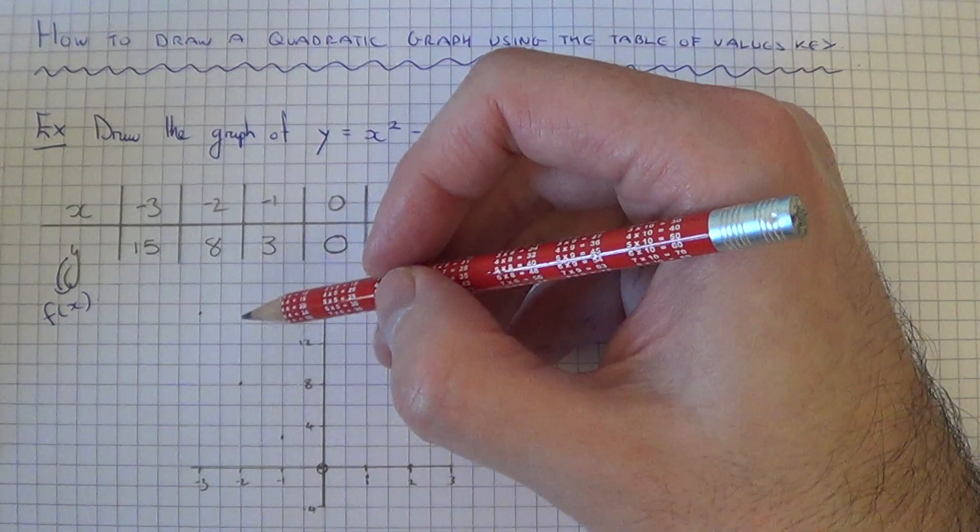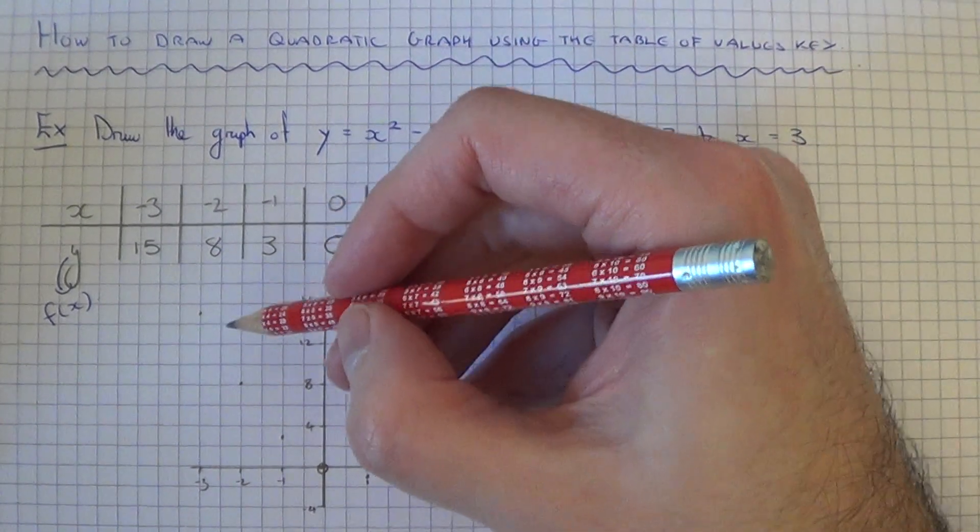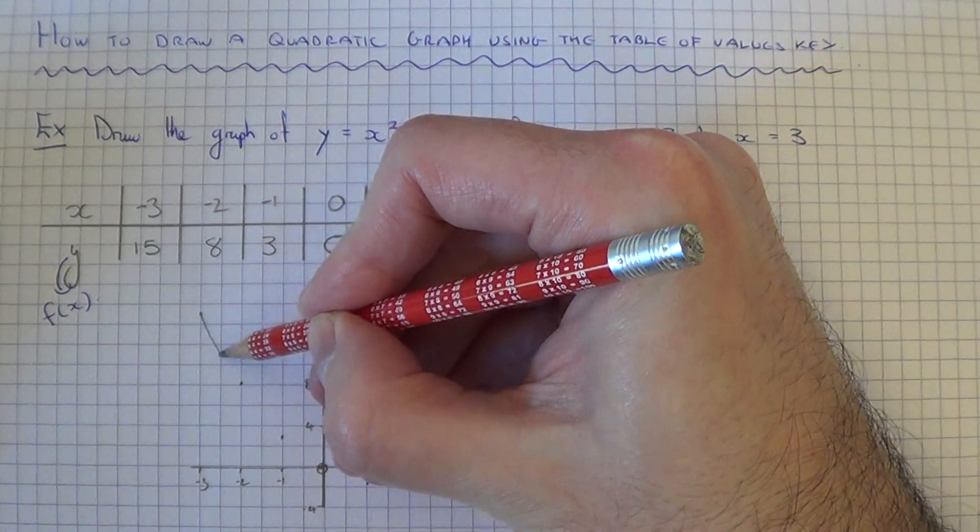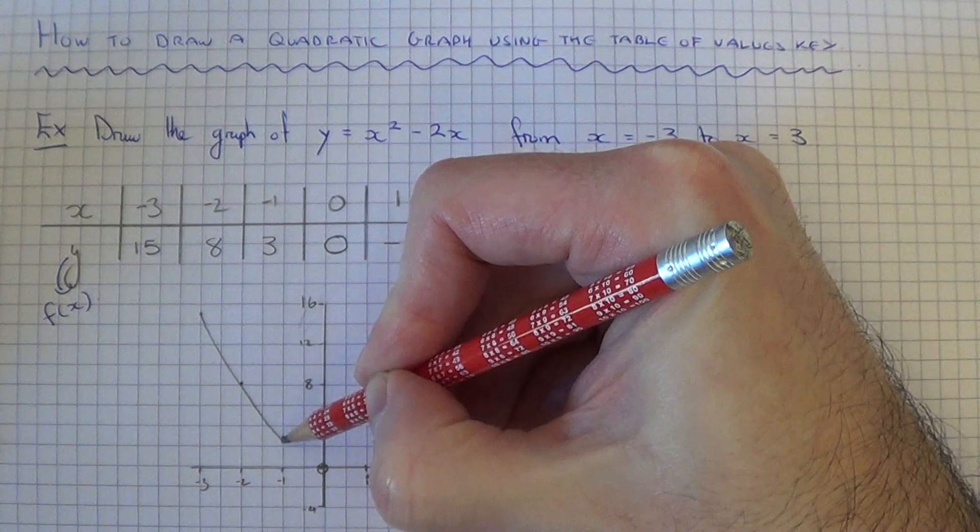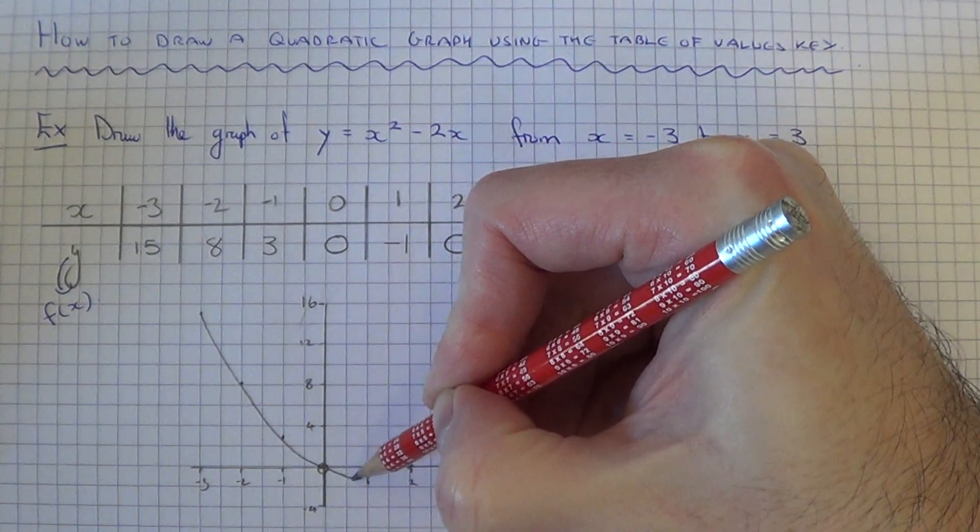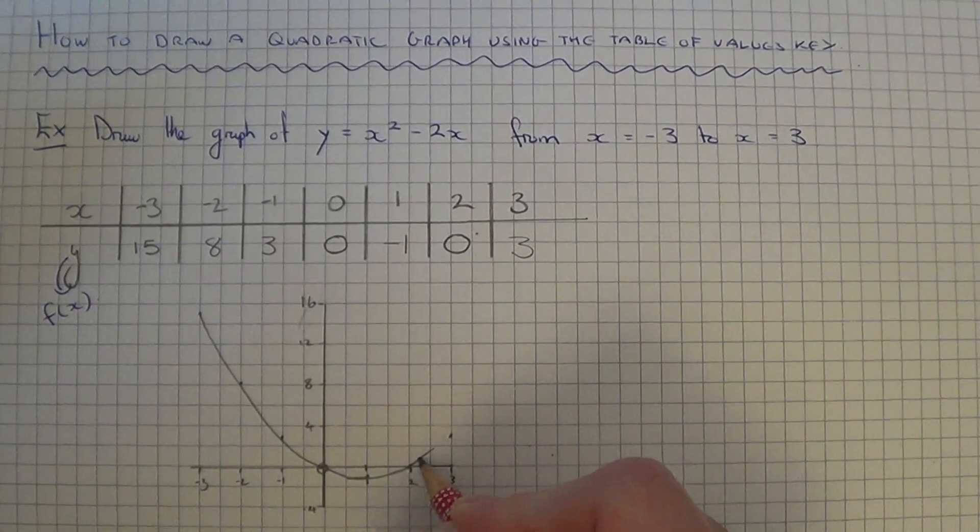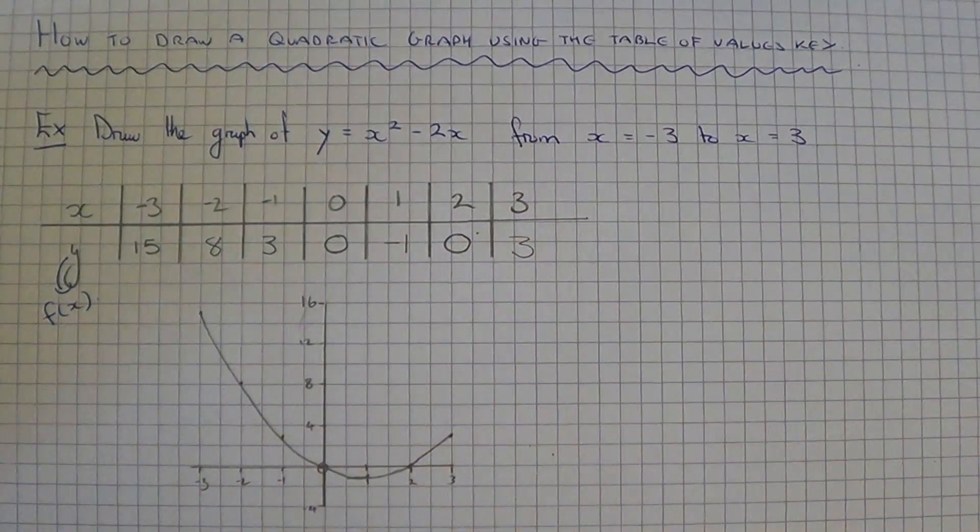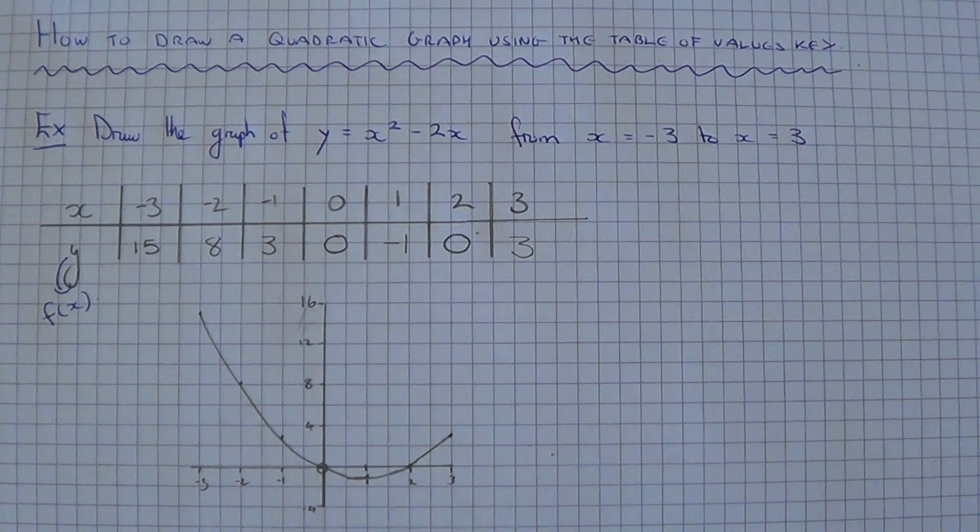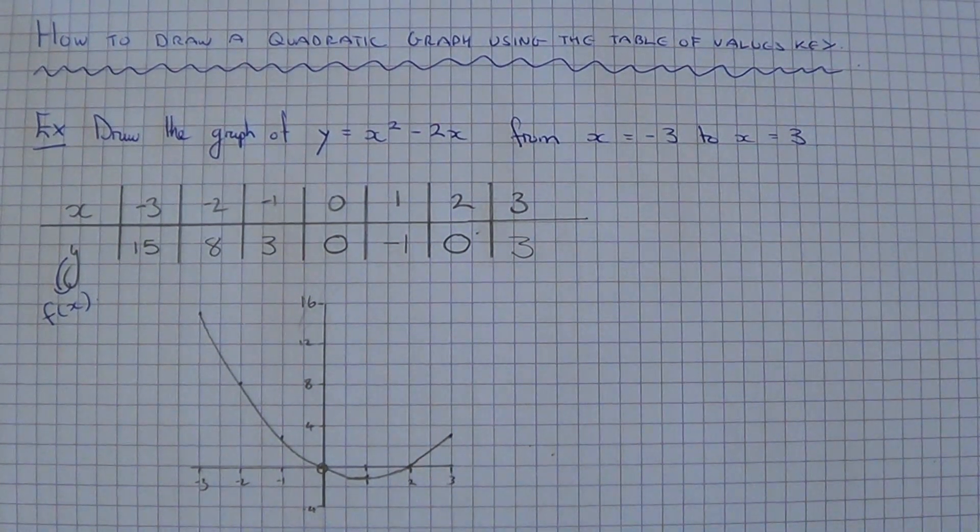We then just need to do a neat curve going through the points. And there you have our graph for x squared minus 2x. Thanks for watching.